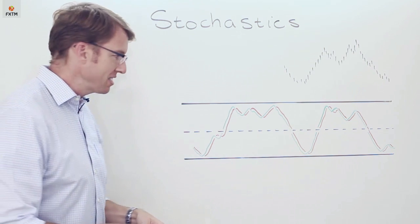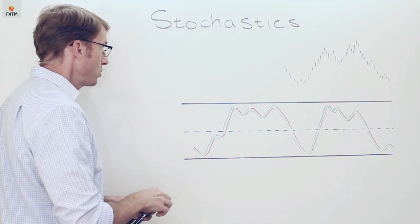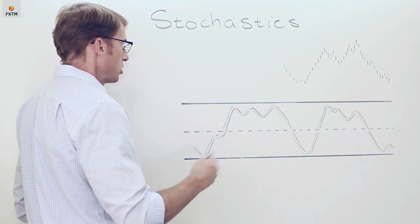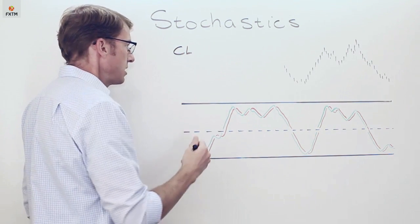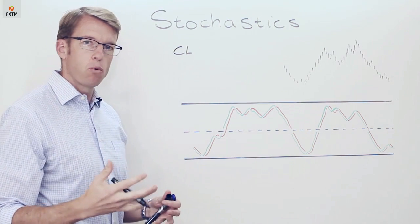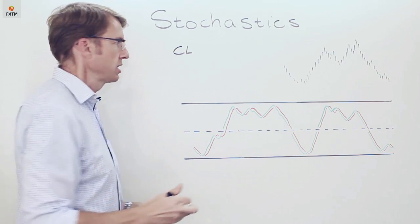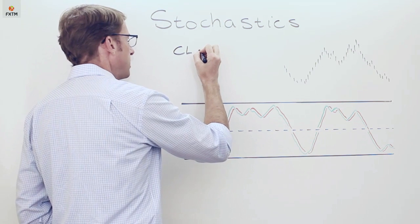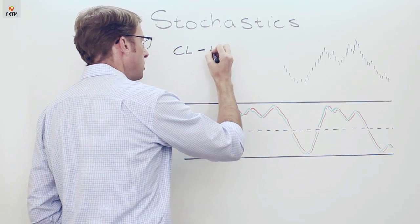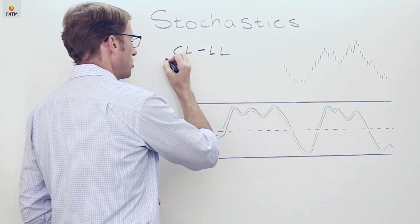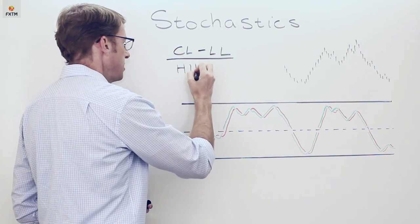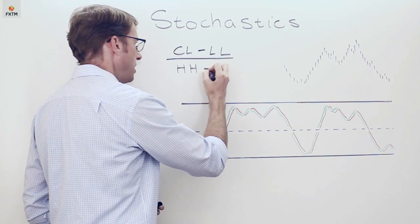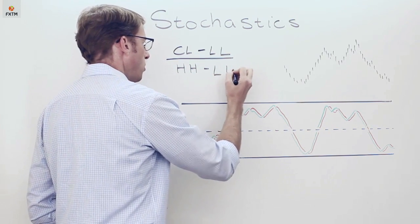Now, the Stochastics Oscillator essentially analyzes the relationship between closed prices over a lookback period. The default is about 14 periods. So closed prices, that is then subtracted from the lowest low over that lookback period, which is then divided by the highest high price over that same lookback period minus the lowest low over that period.